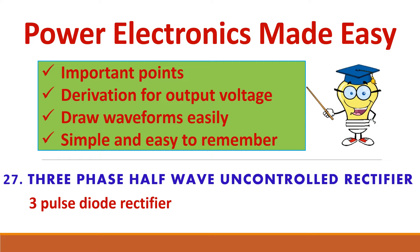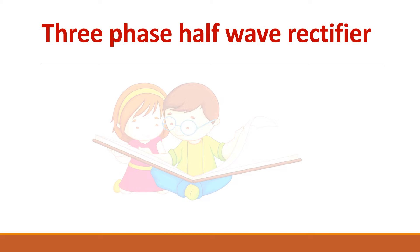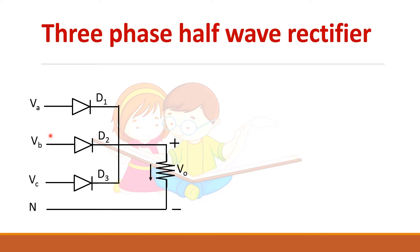Let us see about the 3-phase half-wave uncontrolled rectifier, which is also called a 3-pulse diode rectifier. In a 3-phase half-wave rectifier you have 3 phases: VA, VB, and VC. There is a neutral line which provides a return path for the current. Since it is a half-wave rectifier, one diode is enough in each phase, so it has a total of 3 diodes.